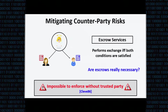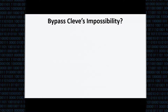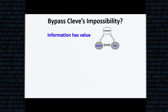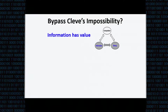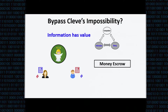We still want to do something useful, so we ask if there's a setting where we can bypass this impossibility. Since it's known that the standard setting doesn't allow this, we move to a slightly different model based on the assertion that information has value. Alice has some value for the document she expects to get from Bob, and we hope to use this relationship between information and its value to people to come up with a different model involving money.